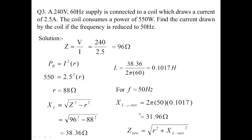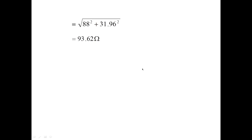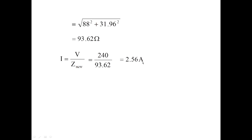Now let us calculate the new impedance with the reduced frequency. New impedance Z_new = √(r² + XL_new²) = √(88² + 31.96²) = 93.62 ohms. The new current is I = V / Z_new = 240 / 93.62 = 2.56 amperes. Compared to the original 2.5 amperes at 60 hertz, the current increases slightly to 2.56 amperes at 50 hertz due to the reduced impedance.